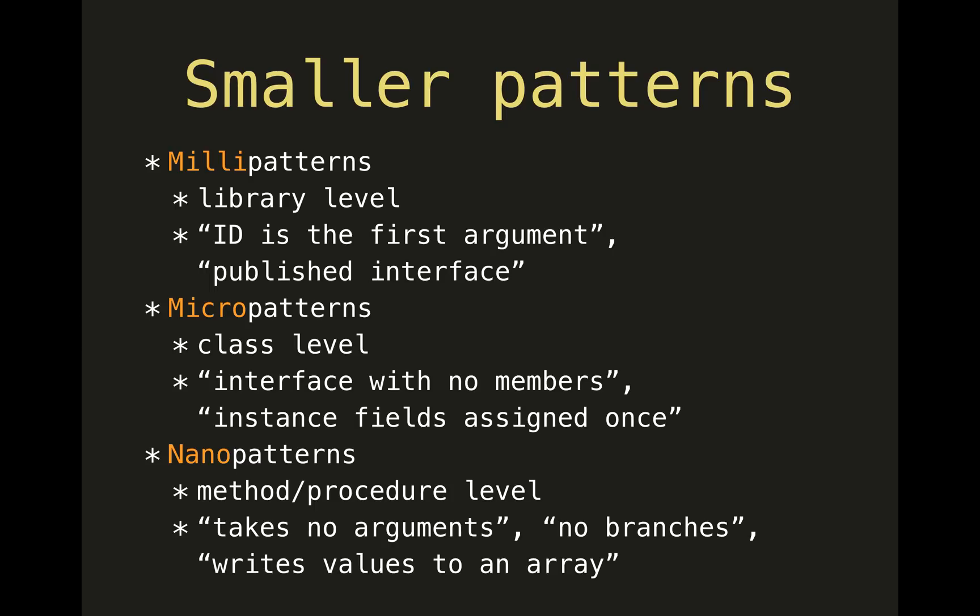There are also newer attempts — existing for only a couple of years — to define even smaller patterns. Many patterns exist at the library or package level, involving several interconnected classes. These include things like API design patterns — for example, whether an ID should always be the first or last argument — and the concept of a published interface, which is public but also known to be heavily depended upon by third parties, meaning you shouldn't change it much or at all.